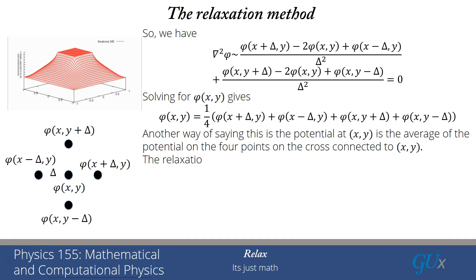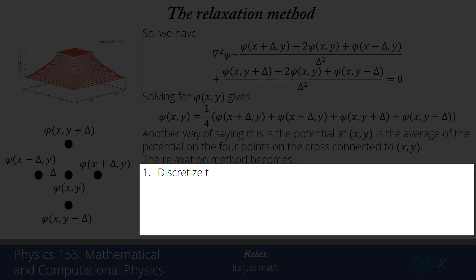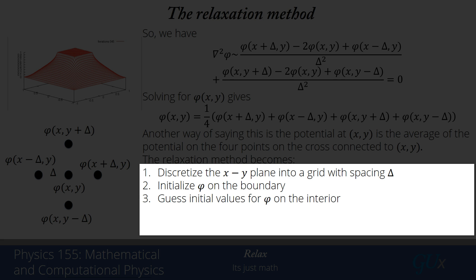Let me go through it. There are five steps to it. The first thing we do is discretize the x, y plane into a grid that has a spacing delta. Then we initialize phi on the boundary. Remember, we know exactly what phi is on the boundary because that's the boundary condition that is input into the problem from the start. Then we're going to make a guess for the initial value of phi on the interior. We could take it equal to the value on the boundary if the value on the boundary was a constant, or we can maybe take a linear curve that goes between the results on two different boundaries or what have you. We can make whatever guess we want. We have to come up with some initial guess.